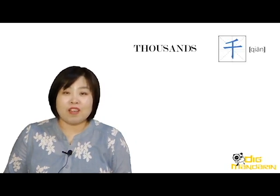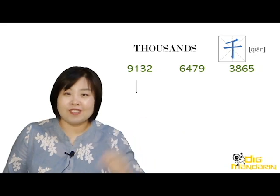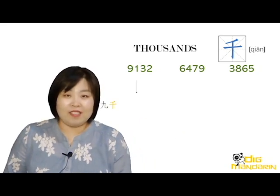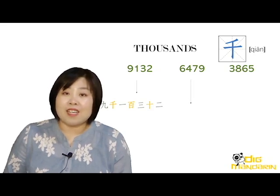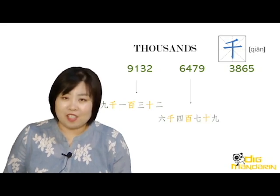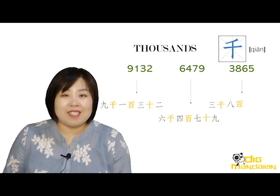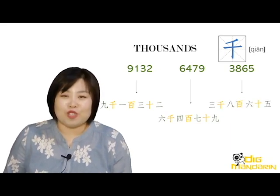Now when it comes to thousands, it's the same as with hundreds — we just need to add 千 after the number. Can you say these numbers? Our first number is 九千一百三十二 (jiǔqiān yībǎi sānshíèr). The second number is 六千四百七十九 (liùqiān sìbǎi qīshíjiǔ). And the last number is 三千八百六十五 (sānqiān bābǎi liùshíwǔ).